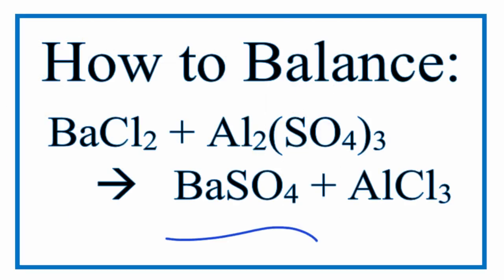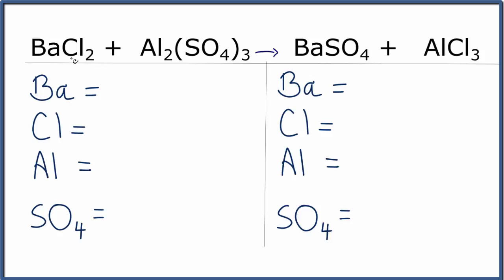To balance this reaction, barium chloride plus aluminum sulfate yields barium sulfate plus aluminum chloride. I've written down the elements already that are in this equation, and let's add up how many we have of each.